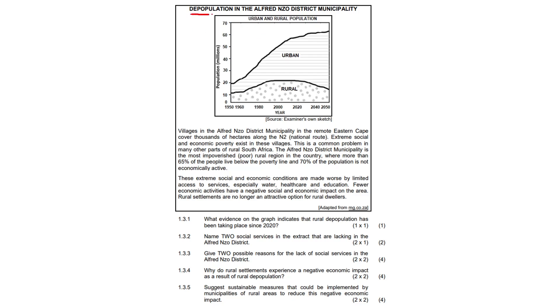The graph below shows depopulation in the Alfred and Zor District Municipality. Villages in this district municipality in the Eastern Cape cover thousands of hectares along the N2 national route. Extreme social and economic poverty exists in these villages. This is a common problem in many other parts of rural South Africa. The Alfred and Zor District Municipality is the most impoverished rural region in the country where more than 65% of people live below the poverty line and 70% of the population is not economically active.